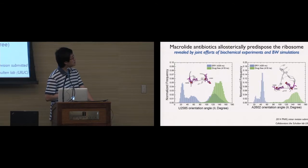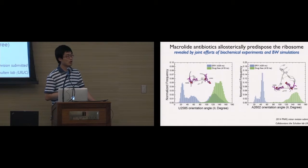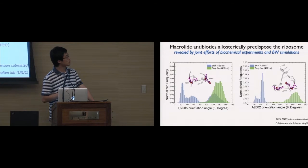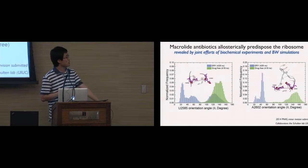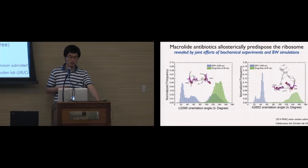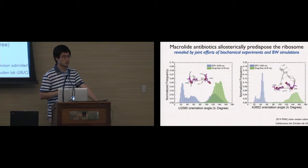So what is the implication of this finding? These two nucleotides, U2585 and A2602, are two very critical nucleotides in the catalytic center of the ribosome. Studies have shown that those two nucleotides have to be in the looped-out orientation — we call it a bulge — in order for the ribosome to function properly. Because the drug can induce the conformational change of these two nucleotides, we showed that macrolide can predispose the ribosome, maybe even before the protein synthesis begins.